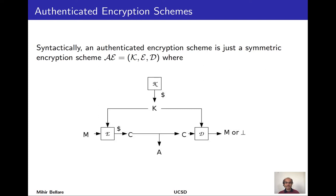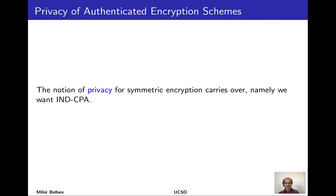Syntactically, an authenticated encryption scheme is identical to a symmetric encryption scheme — a collection of three algorithms: key generation, encryption, and decryption. Key generation runs once and produces a key communicated to sender and receiver. Encryption takes the message and key to produce a ciphertext and is possibly randomized. Decryption is deterministic, takes the ciphertext and same key, and either recovers the message or returns a rejection symbol. We have the usual decryption correctness requirement.